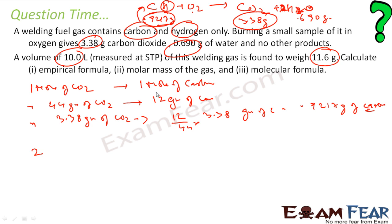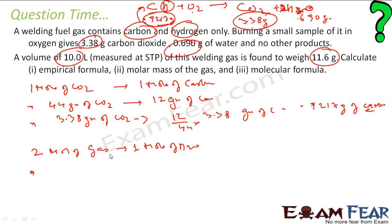I need 2 moles of H2 gas to produce 1 mole of water. So 2 moles of gas is required to produce 1 mole of water. I am comparing the hydrogen part now. 2 moles of H2 is required to produce 1 mole of water — that is 2 grams of hydrogen.